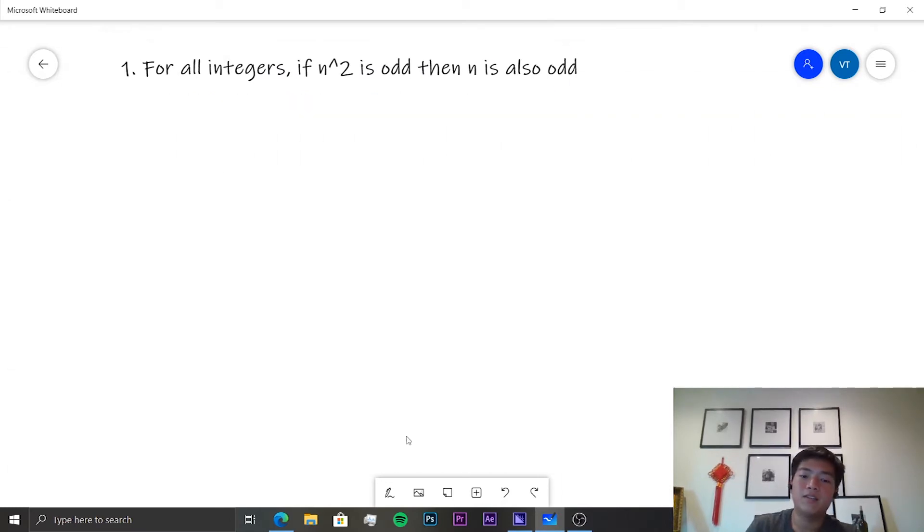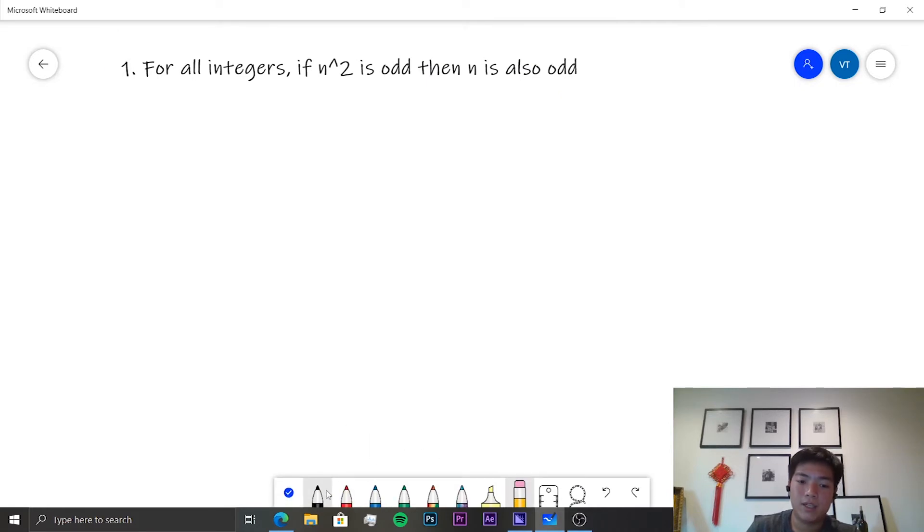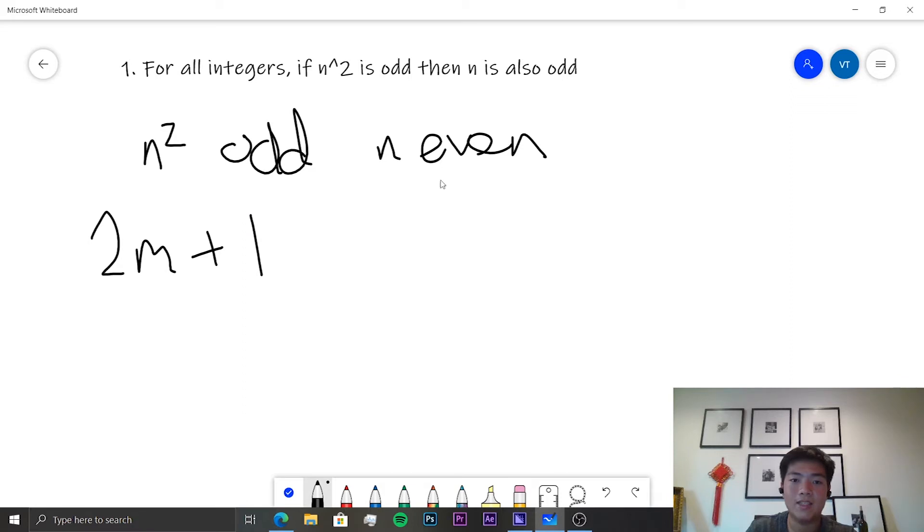And we need to prove all of these statements using proof by contradiction. In this case, we want to assume that our contradictory statement is if there's an n squared that's odd, and that an n that is even exists. And the thing is, if n squared is odd, it can be expressed in the form 2m plus 1. And if n is even, it can be expressed in the form 2k, where m and k are any integer.